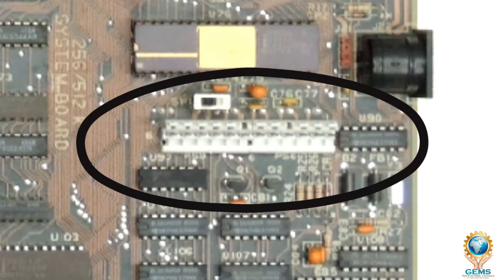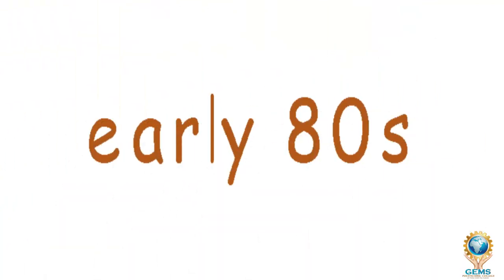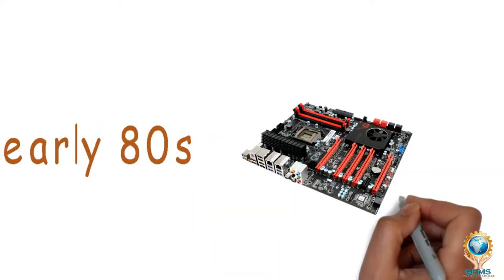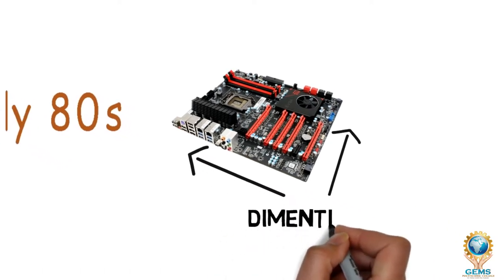There are two power connectors of six pins each mounted on the AT motherboard. AT motherboards were available in the early 80s. In the era of IBM compatible personal computers, the AT form factor referred to the dimension and layout of the form factor, meaning it refers to the size of the motherboard. Many third-party manufacturers produced motherboards compatible with the IBM AT form factor.